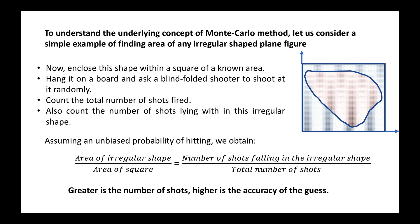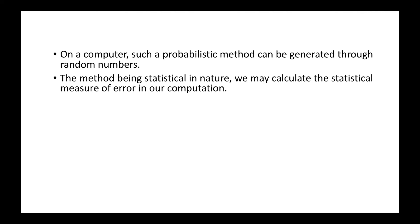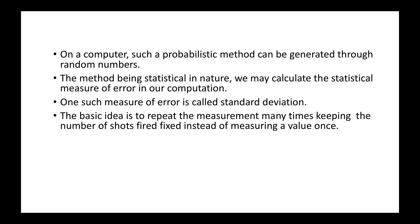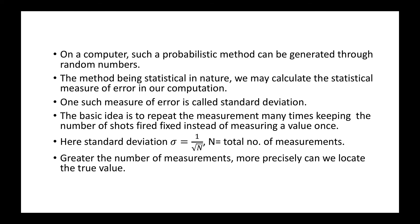Greater the number of shots, higher is the accuracy. On a computer, such probabilistic methods can be generated through random numbers. Being statistical in nature, we can calculate the statistical measure of error in our computation — one such measure is called standard deviation. The basic idea is to repeat the measurement many times keeping the number of shots fixed. The standard deviation sigma equals one divided by the square root of N, where N is total number of measurements. Greater the number of measurements, more precisely can we locate the true values.